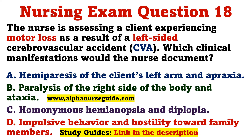A. Hemiparesis of the client's left arm and apraxia. B. Paralysis of the right side of the body and ataxia. C. Homonymous hemianopsia and diplopia. D. Impulsive behavior and hostility toward family members.